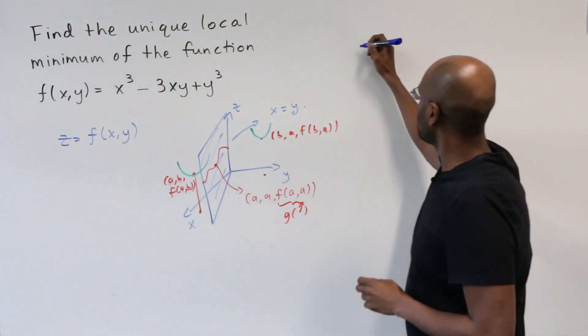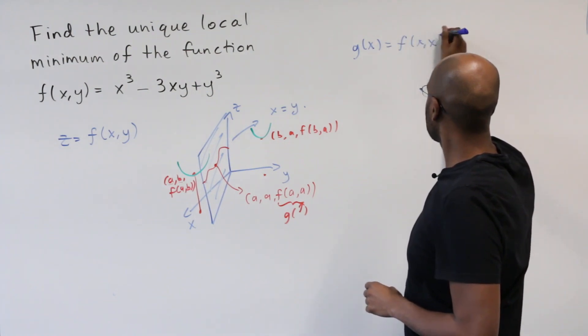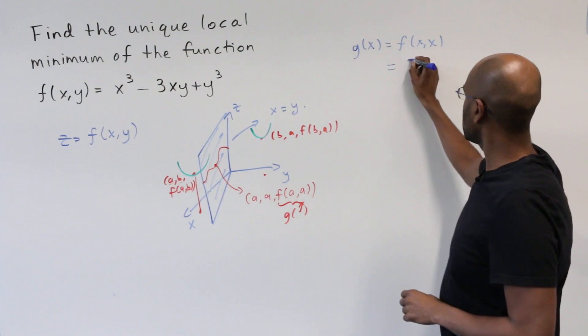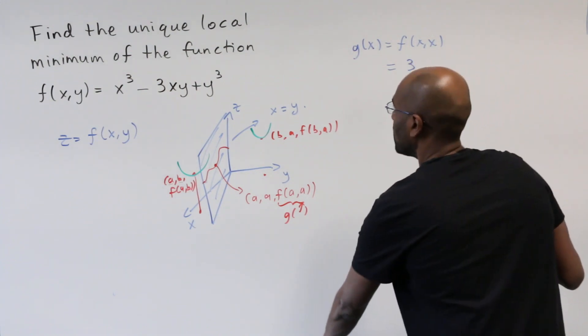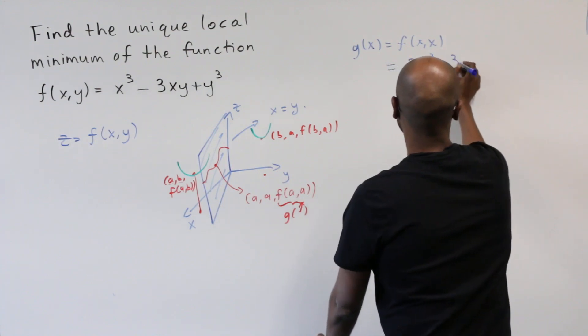So we create a function g of x, that's f of x, x, and f is described as follows. So f of x, x is 2 x cubed minus 3 x squared.